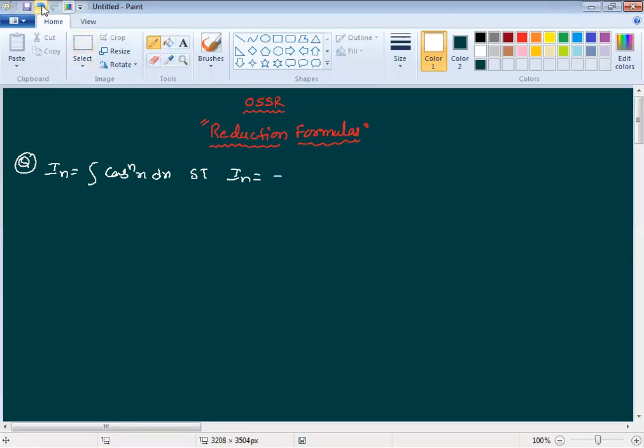In equals 1 by n cos power n minus 1 x into sin x plus n minus 1 by n into In minus 2. This is what we need to prove. Then continue to find integral cos power 5x or 6x using this reduction formula.